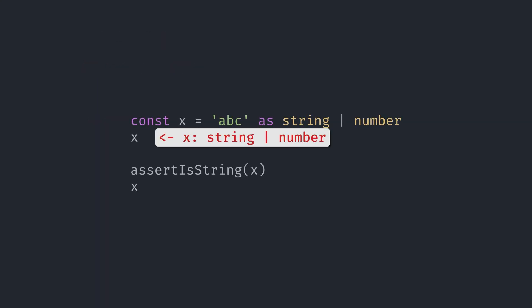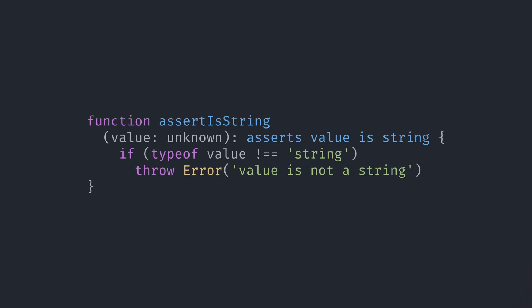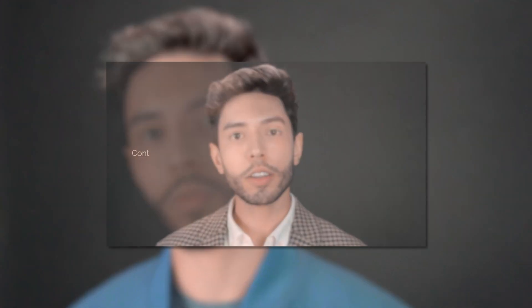If you call a function that throws if your value is not a string, then all the code that comes after it will only run if your value is a string. So TypeScript narrows our type to string. To abstract this explanation, TypeScript uses control flow analysis to narrow our type to what was asserted. In this case we have asserted that value is a string. We talk about control flow analysis in the second video of the series — I'll leave a link for it in the description.